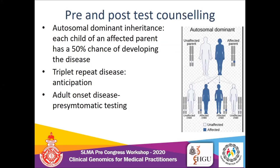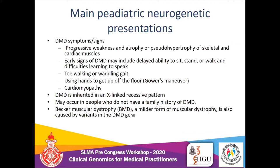Moving to pediatric neurogenetic disorders, the main condition we see is Duchenne's muscular dystrophy, which has a well-known clinical presentation including progressive muscular weakness, pseudohypertrophy of skeletal muscles, gross motor milestone delays such as difficulty sitting, standing, or walking, waddling gait, the Gowers' maneuver, and cardiomyopathy due to cardiac muscle involvement.